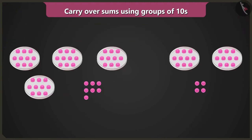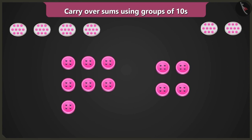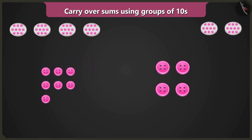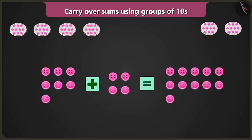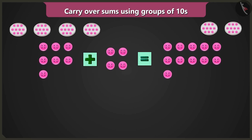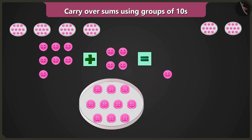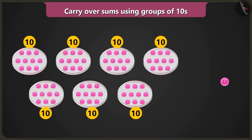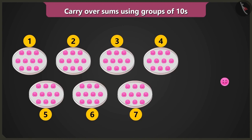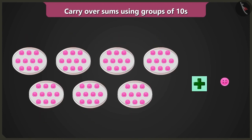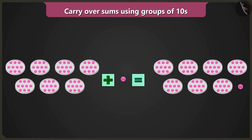To find that out, I will first count the loose buttons. Here we add 7 buttons to 4 loose buttons and get 11 buttons. Out of these 11 buttons, if I make a group of 10 buttons and keep them on this plate, then I will be left with one loose button. Now here there are groups of 10 buttons each in 1, 2, 3, 4, 5, 6, 7 plates that make 70 buttons, and adding one loose button will make 71 buttons.